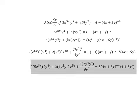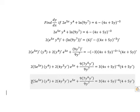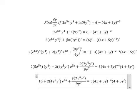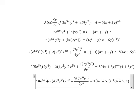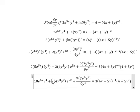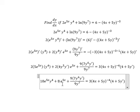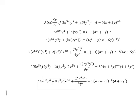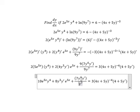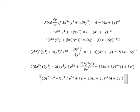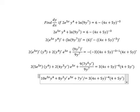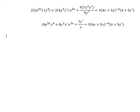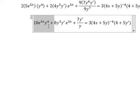Now we need to simplify again. This gives us 10e to the power of 5x times y to the power of 4. We get numbers 2 and 4, giving us 8. The 9s cancel. We simplify e to the power of 5x terms. Now we move this to give 4x plus 7y to the power of negative 4.